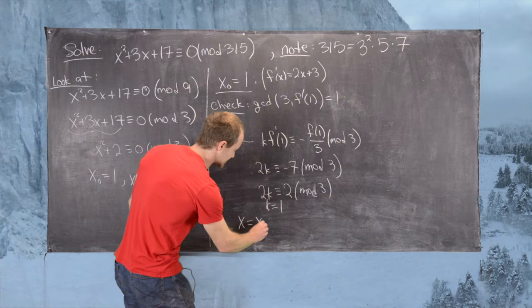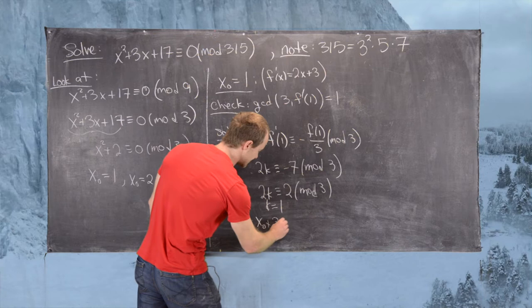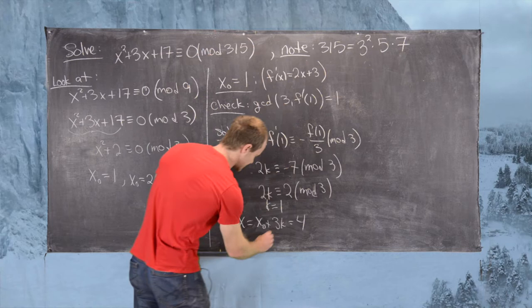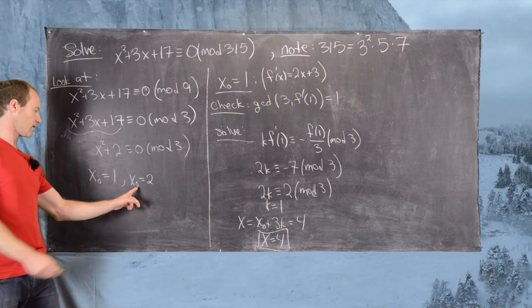Now x equals x₀ plus 3k, so x equals 1 plus 3 times 1, which equals 4. So x equals 4 is one solution to the congruence mod 9. Now we'll do this whole thing again for our generating solution x₀ equals 2.